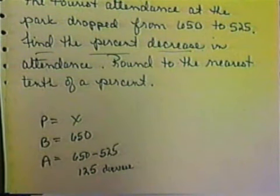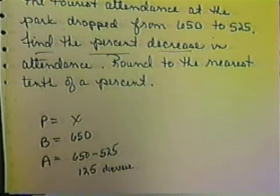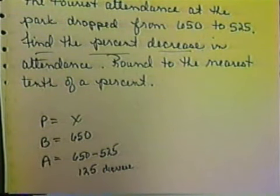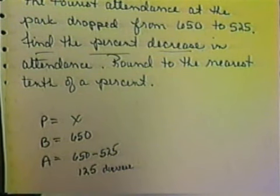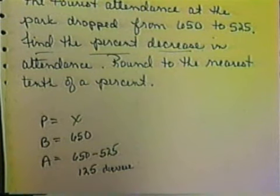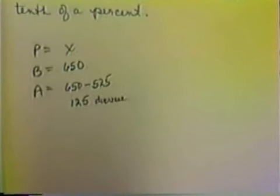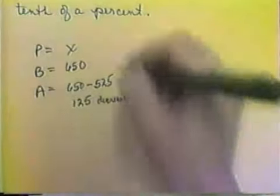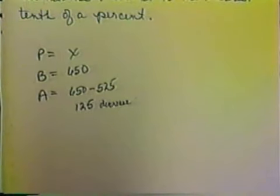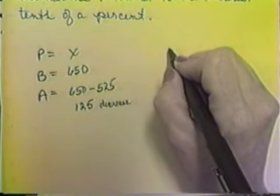So we now have our percent as our unknown — that's what we're looking for. The base was $6.50, that's the original amount, where did we start. And the amount is the difference from where it started and where it ended up, which was $1.25. Now we're going to take this and put it in our proportion formula, now that we've dissected the problem, we can use this information to solve it.